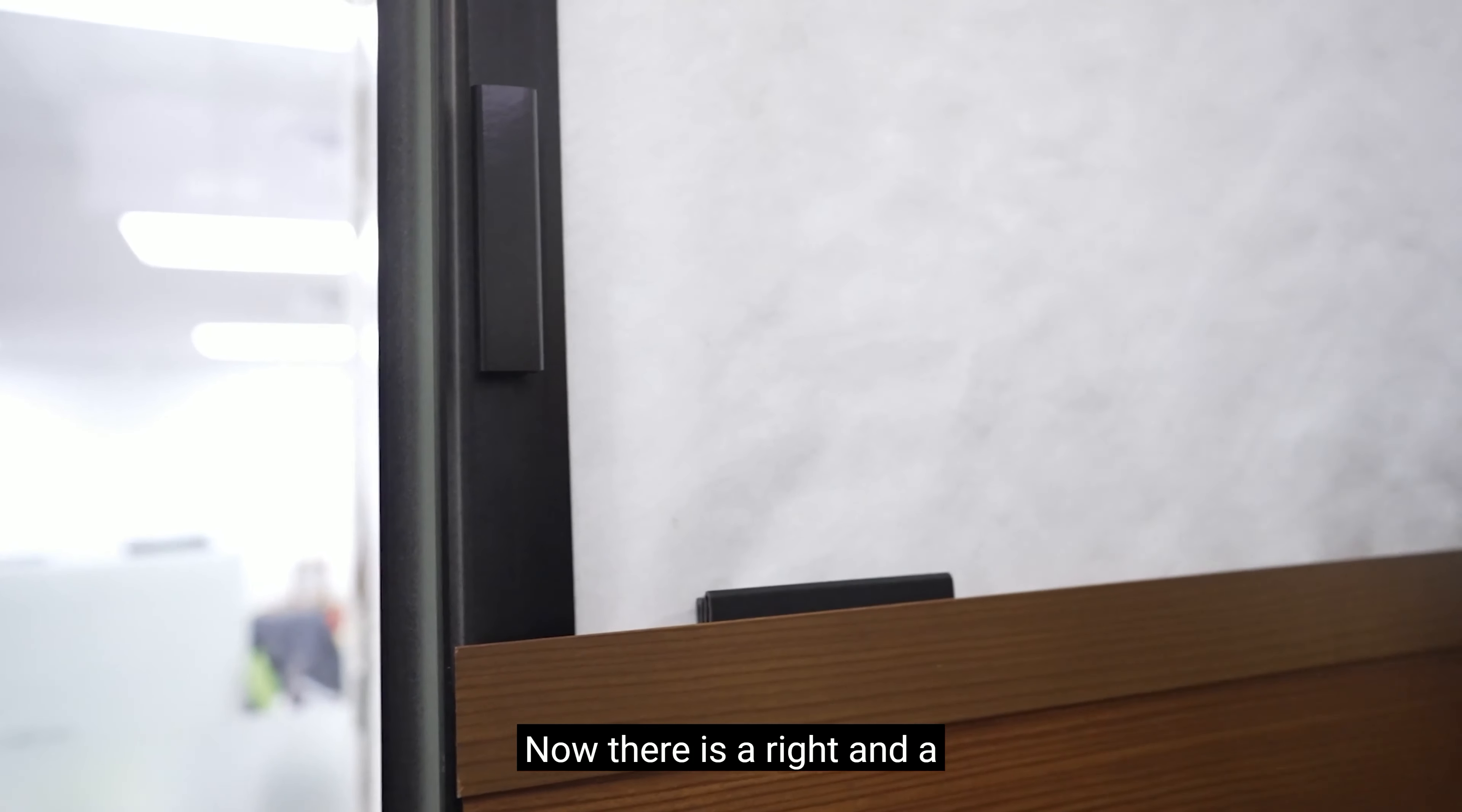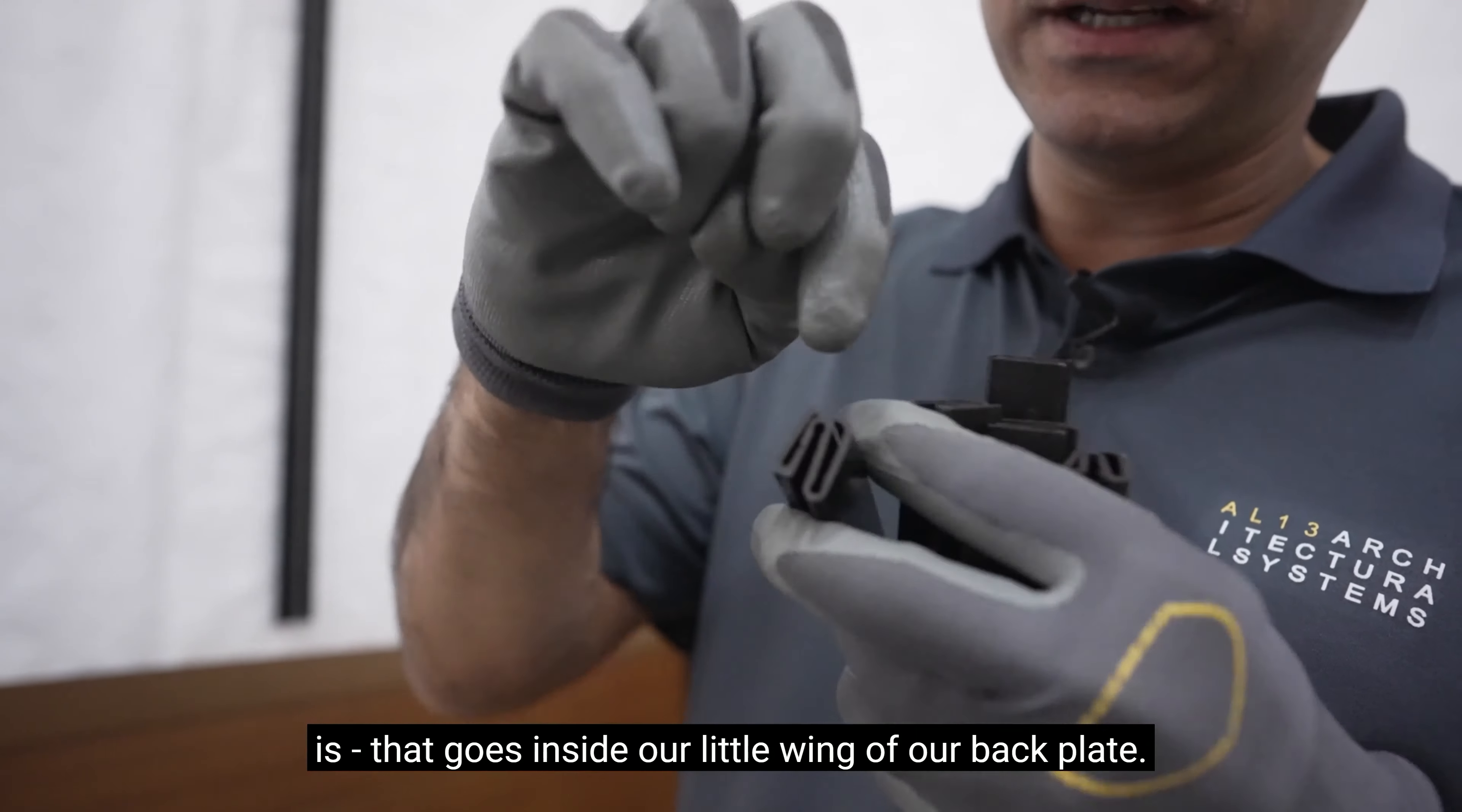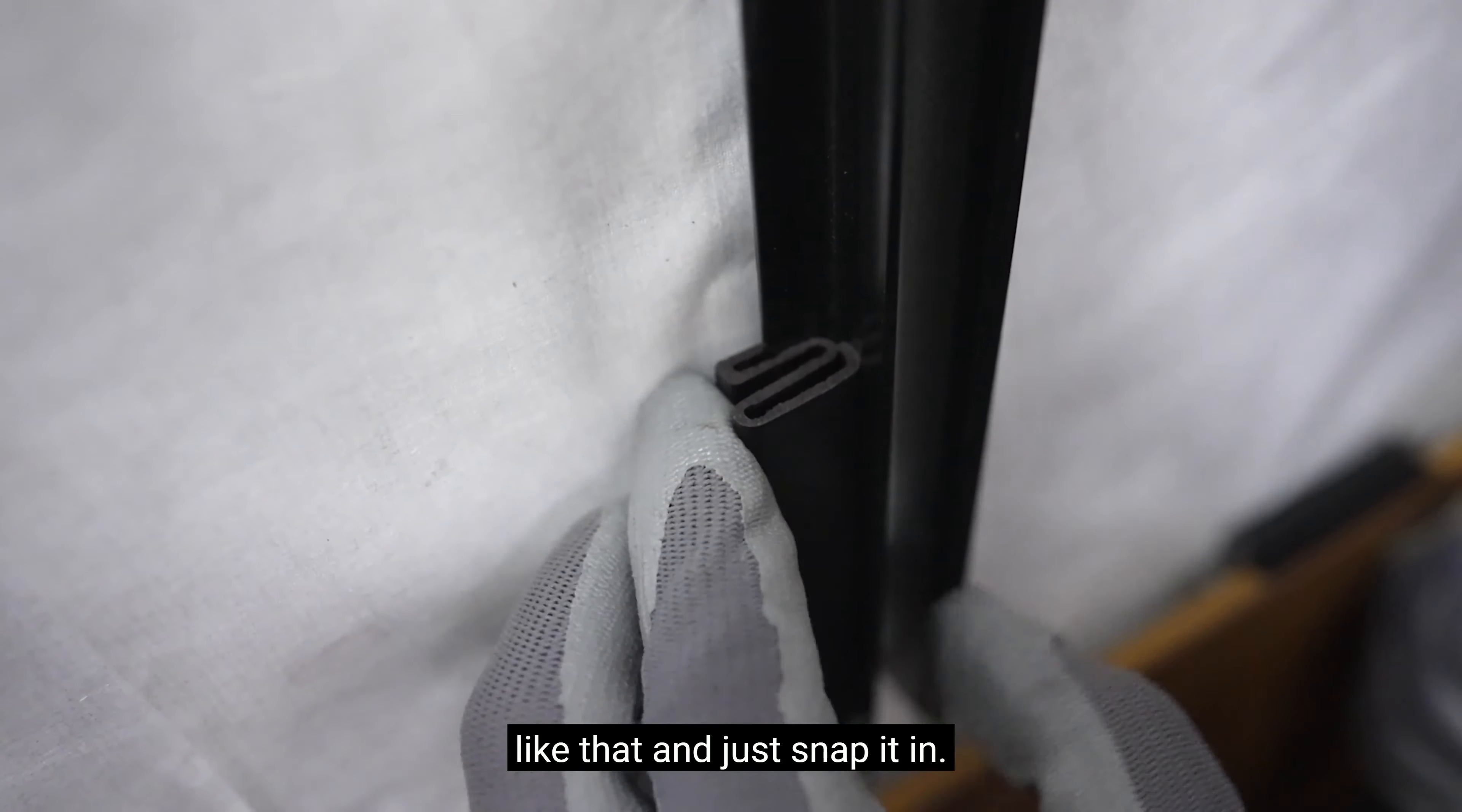Now there is a right and a wrong way to put these on. The right way is the shorter side where the opening is, that goes inside our little wing of our back plate. Take that nice edge on an angle like that and just snap it in.